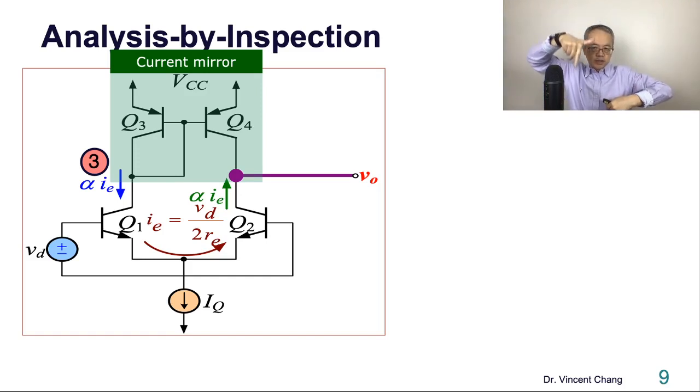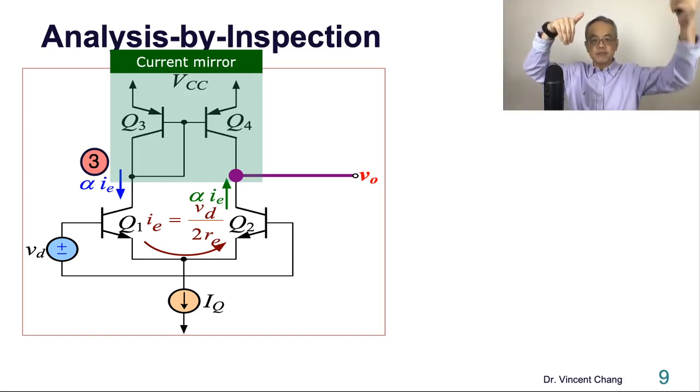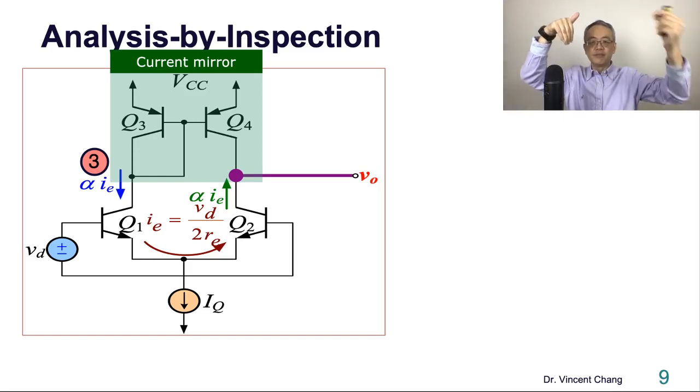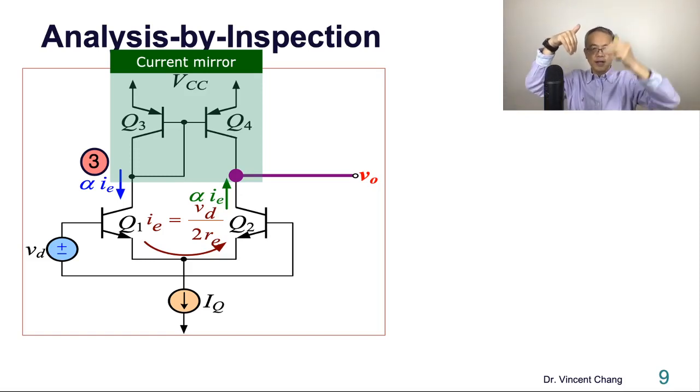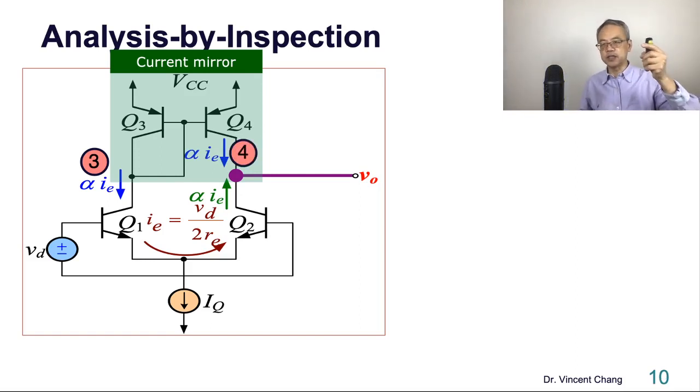Therefore, the alpha IE, the number 3 current, once touched the current mirror, it will generate another current because it's the mirror reproduction current on the right-hand side. So number 4. So 3 to 4 is totally because of the current mirror, current reproduction.